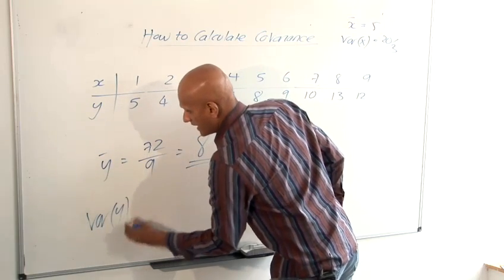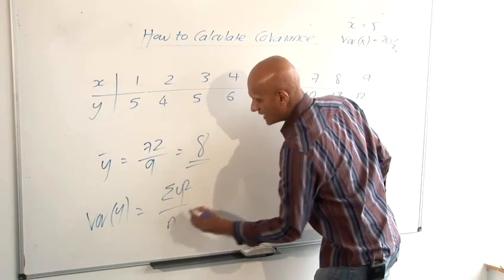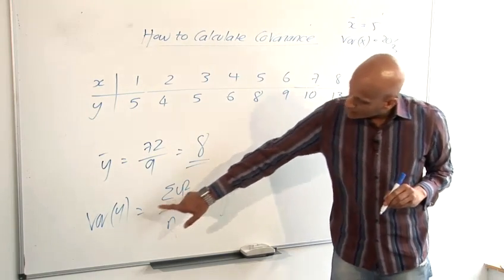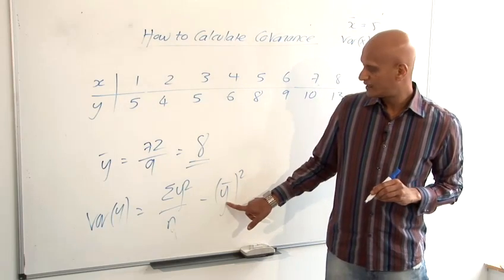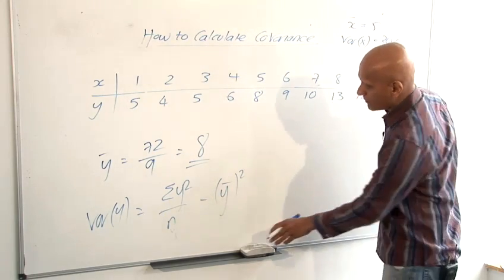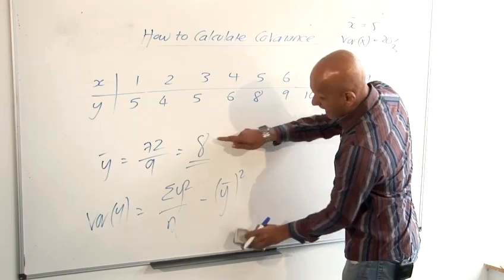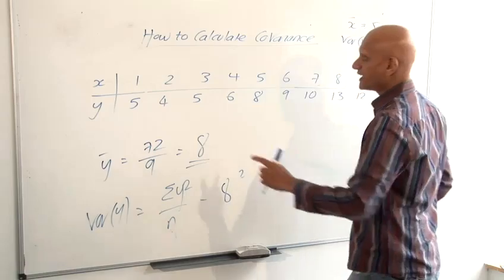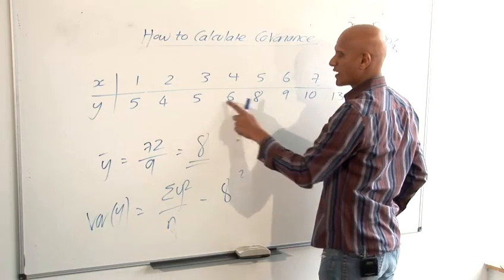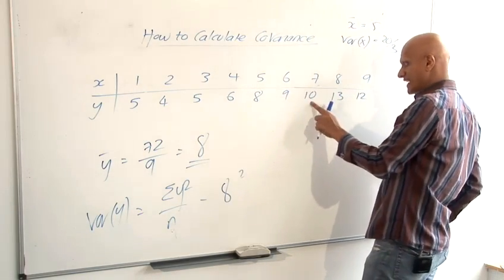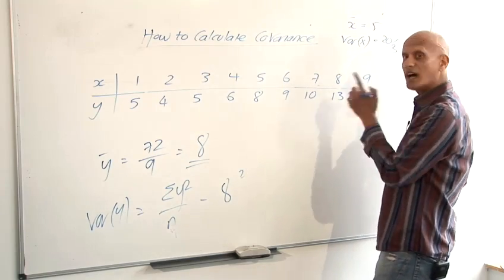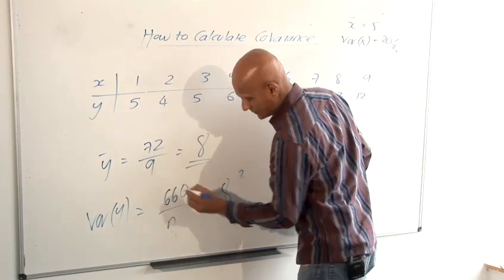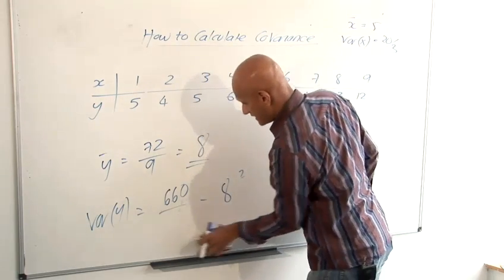Variance of Y is found by sigma Y squared over N minus Y bar squared. So same formula as the variance of X except we're just using the letters Y here. We know our mean of Y which we worked out before was 8, so that's 8 squared. Our sigma Y squared is going to be 5 squared and 4 squared and 5 squared and 6 squared and 8 squared and 9 squared and 10 squared and 13 squared and 12 squared all added together. Again you do that on your calculator and that will give you 660.